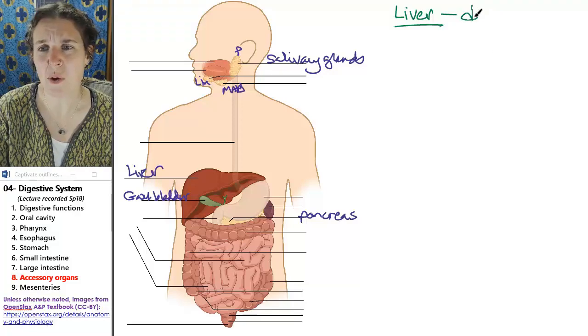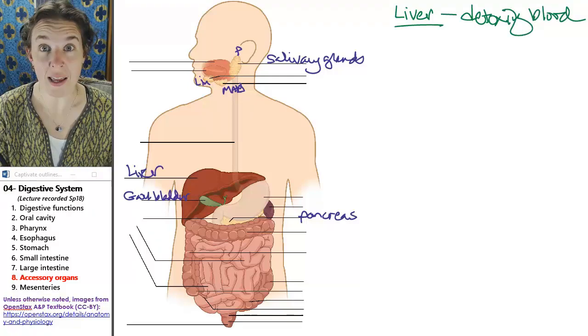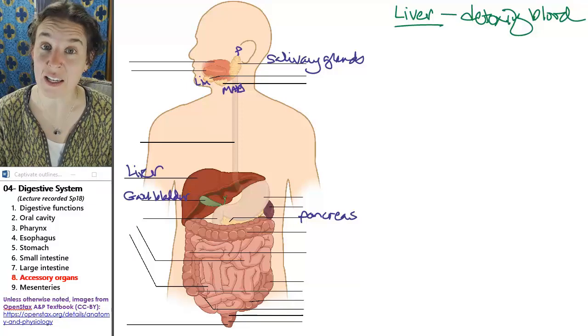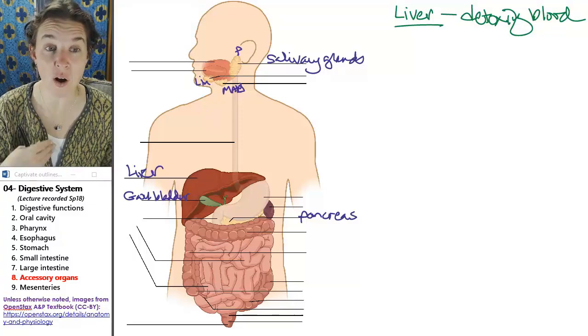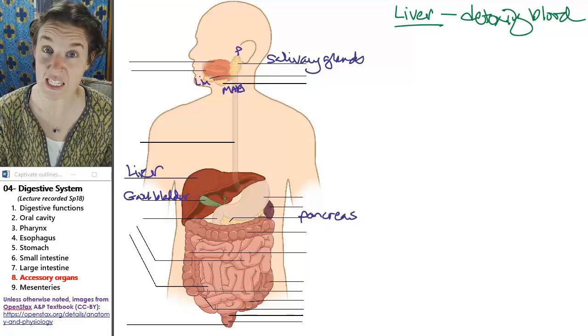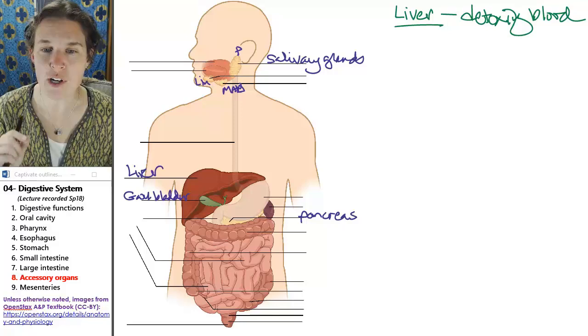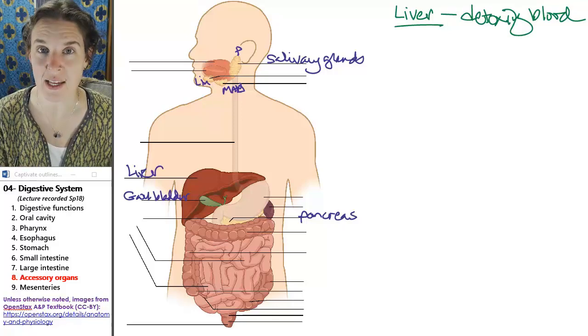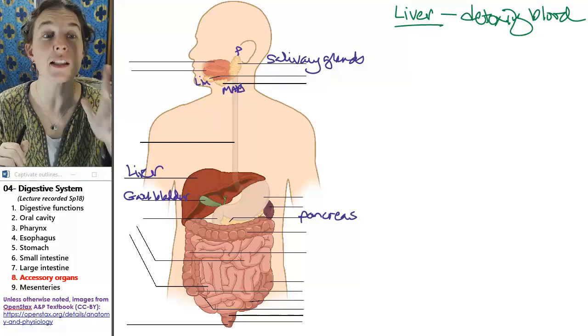The liver is responsible for detoxing your blood. It's one of the reasons why, if you are an alcoholic, it damages your liver because alcohol is a poison. It's yeast pee. Let me clarify.